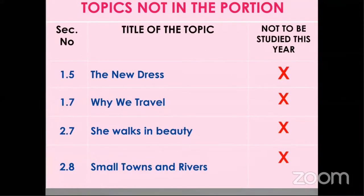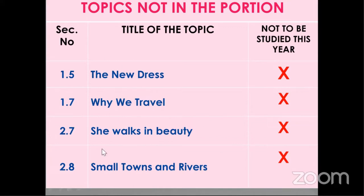Let us start with the topics which are not in the portion this year. There are two topics in the prose and two from poetry which are not in the syllabus, only for this year. So no questions will be asked on these four topics — two from prose and two from poetry. These two lessons and two poems are not to be studied this year.